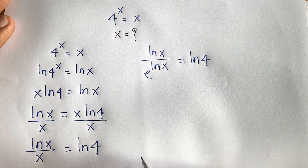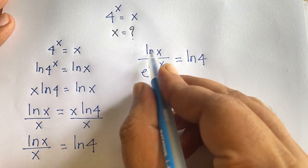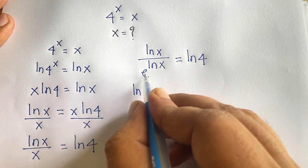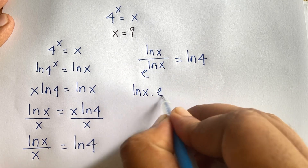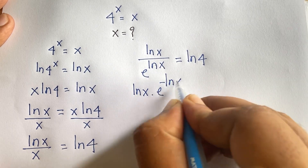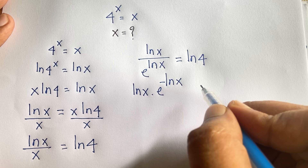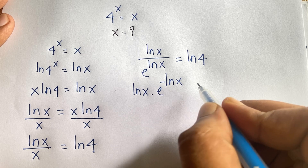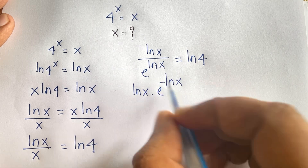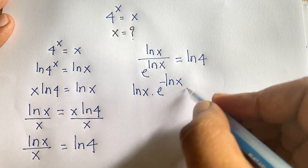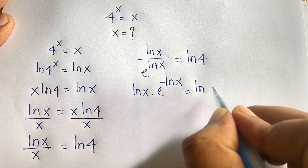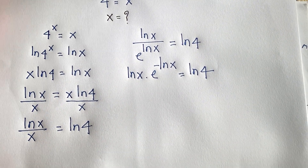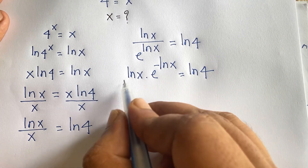Now at this moment, ln x and e to the power ln x — it will be e to the power minus ln x, according to exponential rules. We know that a to the power 1 over e to the power n equals a to the power minus n. So e to the power ln x over x becomes e to the power minus ln x, and this equals ln 4.